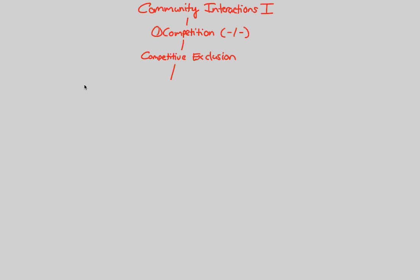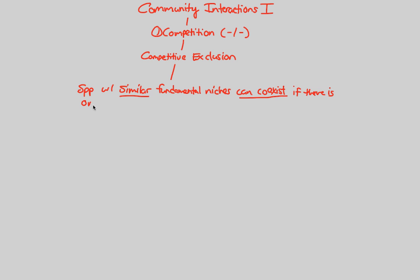What we can say is that species with similar fundamental niches — the keyword here is 'similar,' not identical — can actually coexist if there are one or more differences in their respective niches. So their niches are quite similar, but there's a small yet important difference that allows them to coexist with each other within the same community, which is what we're concerned with in community ecology.